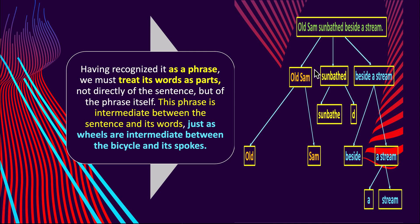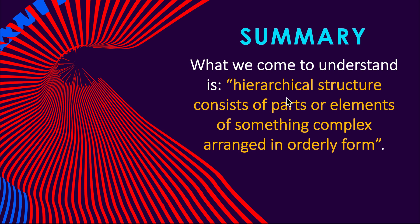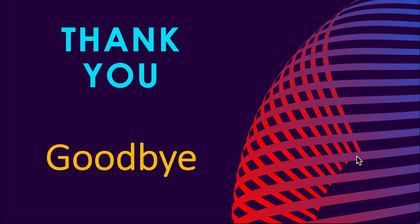Having recognized a group of words as a phrase, we must treat its words as parts not directly of the sentence, but of the phrase itself. The phrase is intermediate between the sentence and its words, just as wheels are intermediate between the bicycle and its spokes. So hierarchical structure consists of parts or elements of something complex arranged in orderly form. Hope you understand the concept. Thank you and goodbye.